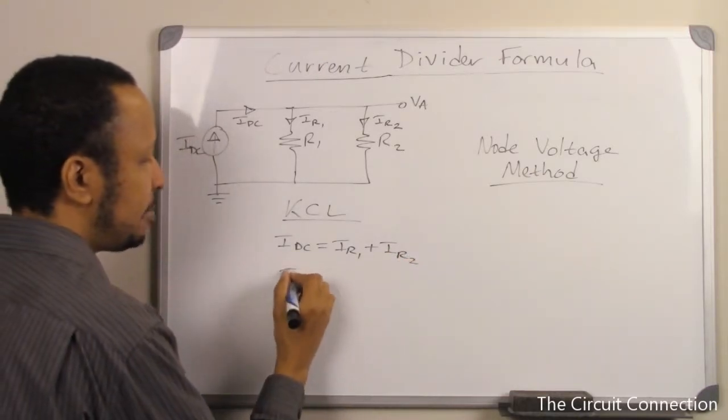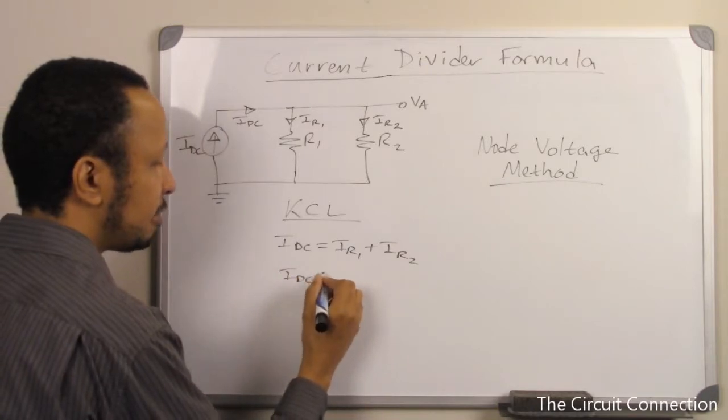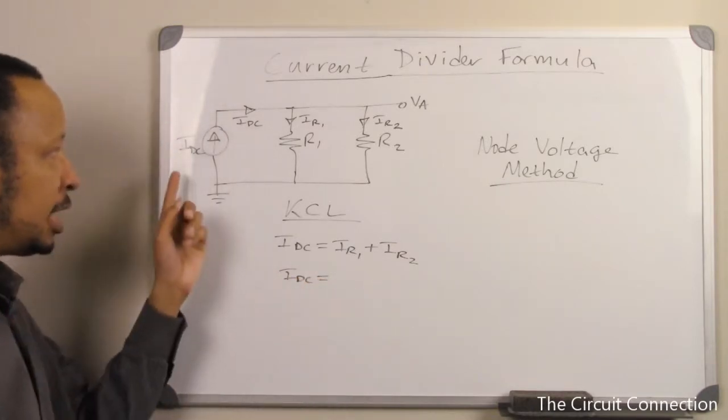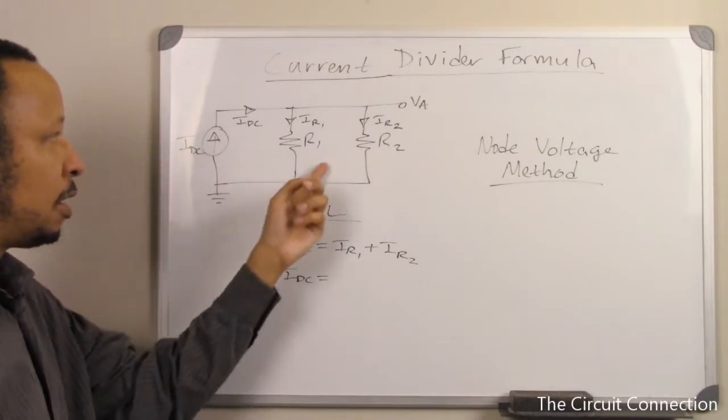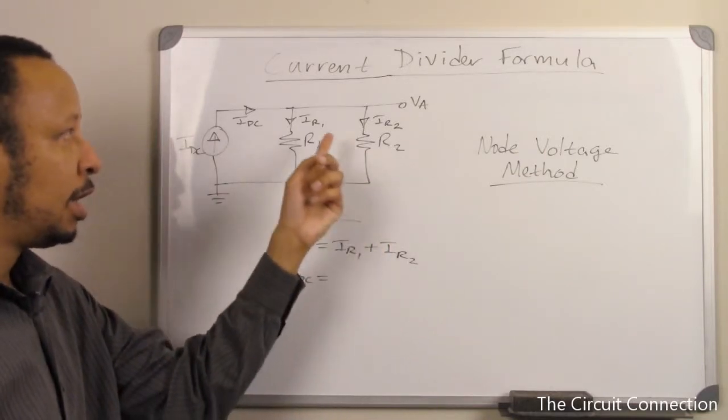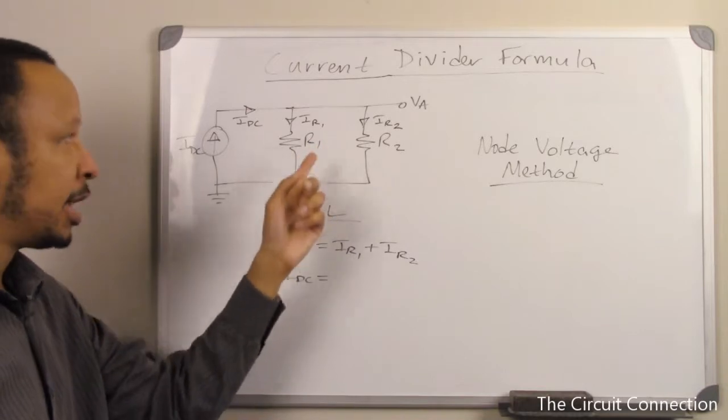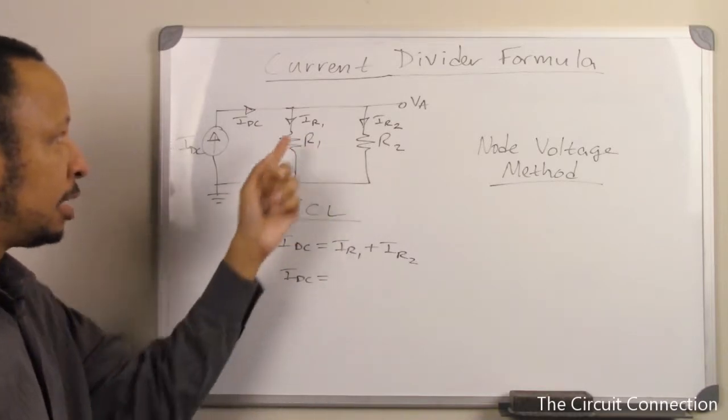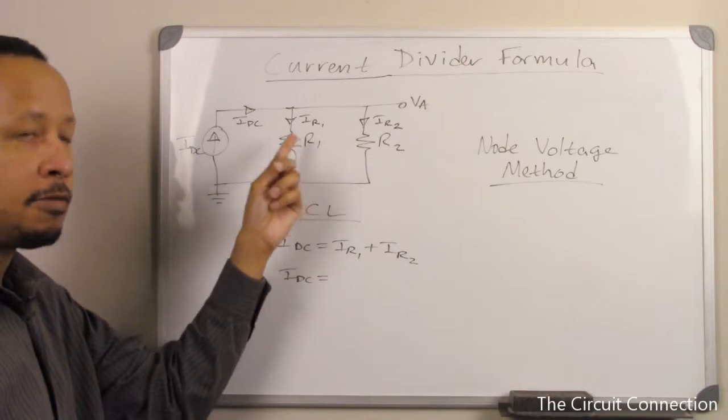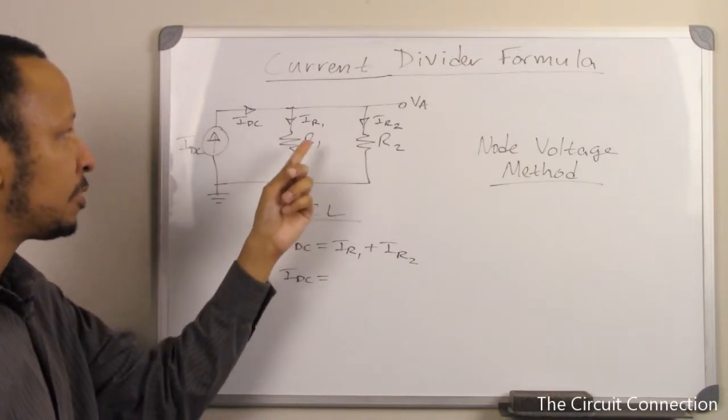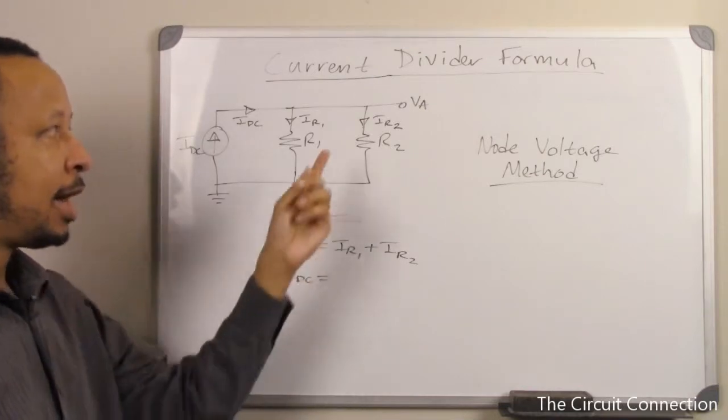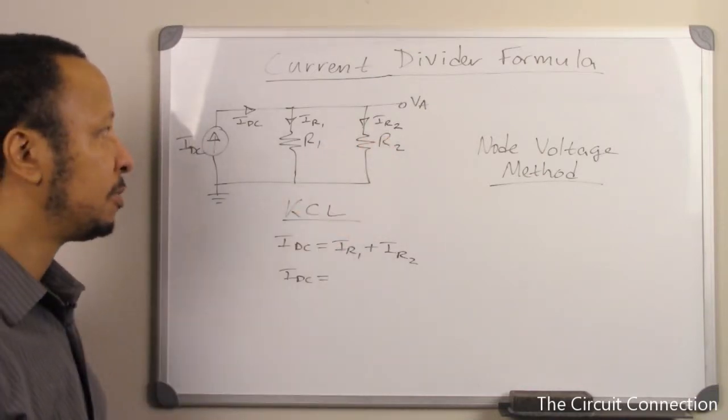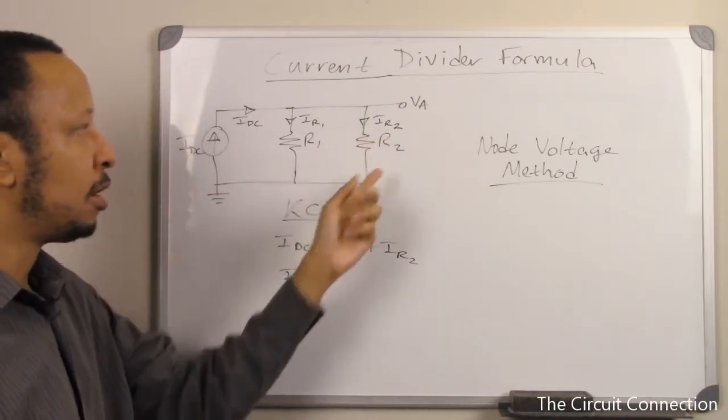Next, I'll keep IDC in there because that's something that we want to keep. Our main goal here is to get IDC, R1, and R2, and one of these two branch currents here, and say what IR1 will be in terms of R1, R2, and IDC, or what will IR2 be in terms of IDC, R1, and R2.